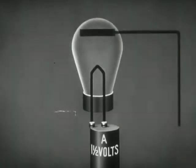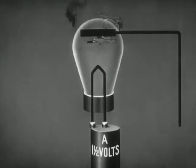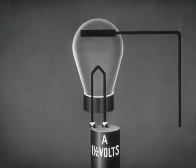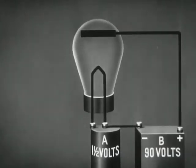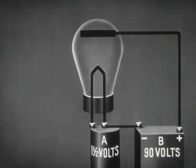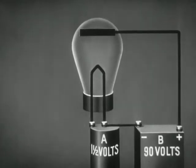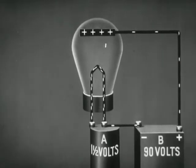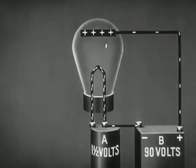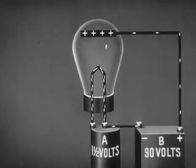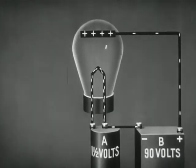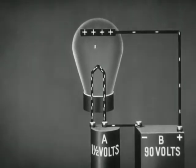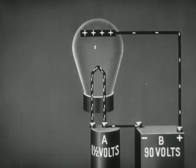Now let us add a second element called the plate. Actually the plate is a metallic cylinder surrounding the filament. The plate is connected to the positive side of a high voltage battery. Since the plate has a positive charge with respect to the filament, electrons are attracted to the plate. A stream of electrons thus flows from the filament to the plate inside the tube, to the battery, and back to the filament. This is the plate circuit.